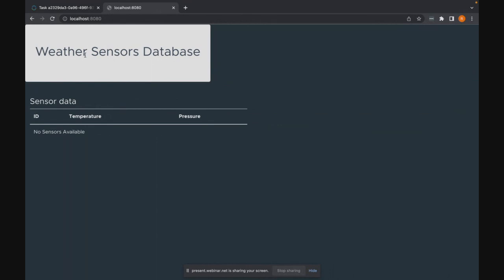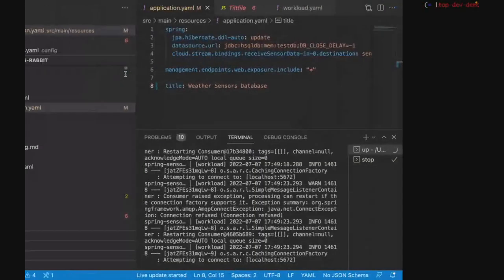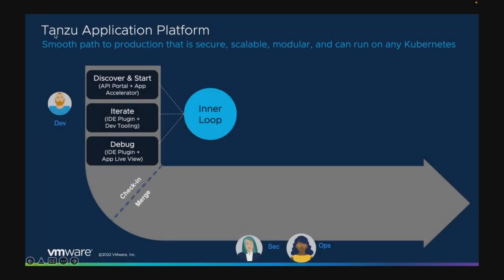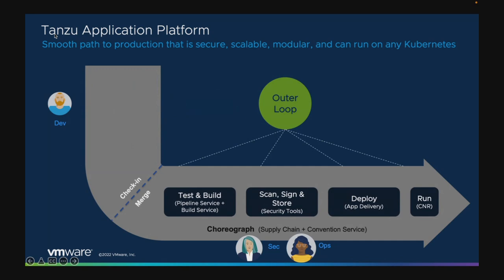The good thing about that from both the developer and DevOps persona perspective is that with those similar environments, you remove a lot of those environmental variables that are typically problematic on the path to production. Let's look at it from an operator experience now. We typically draw the line of demarcation between the developer and the operator at the check-in or the merge point — whenever the developer has finished building their code, checked it in, or merged a pull request. That's really where the outer loop takes over and where your security and operations teams are involved.